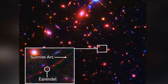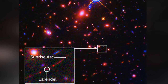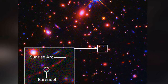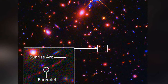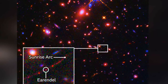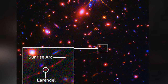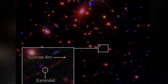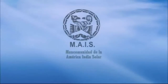For example, the object that has attracted these experts is highlighted in the box of the photograph, and an amplification can be seen on the left side, where they mark what they call the Arc of the Rising Sun and another arc in a circle in the middle.